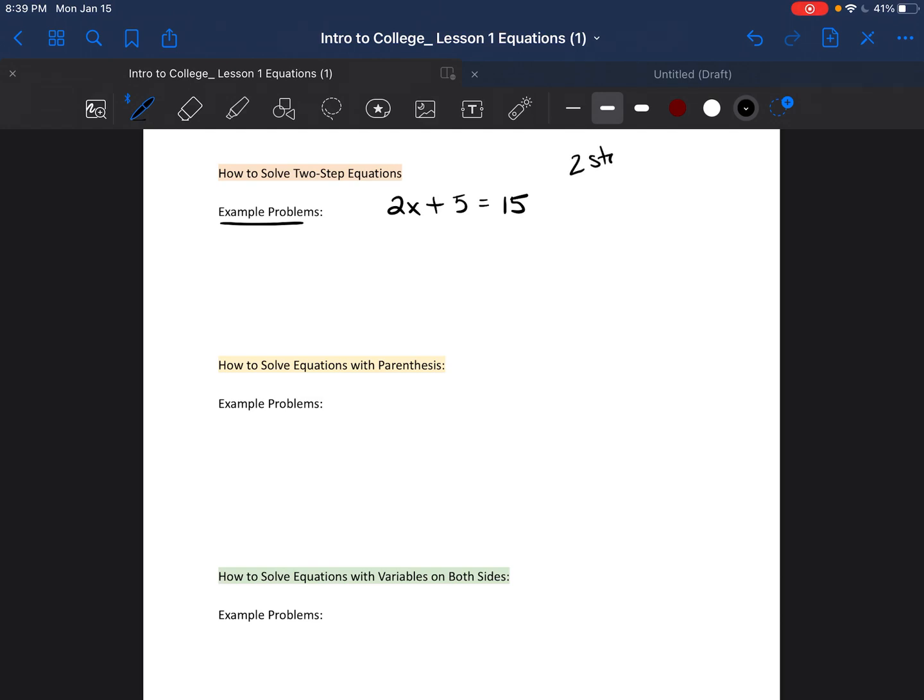So 2x plus 5 is equal to 15. We're going to do two steps to solve. The first step is usually adding or subtracting, and the second step is dividing. The goal remains the same: to get the variable by itself. In this case, the variable is the x.